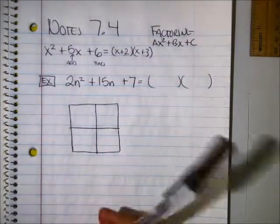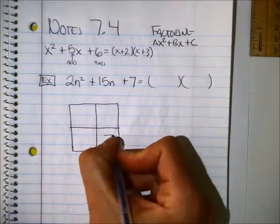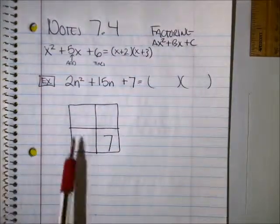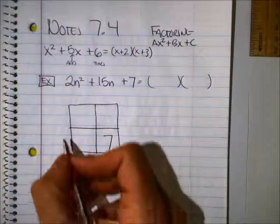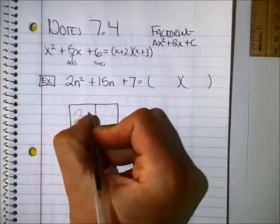That's 7. The 7? That goes in the lower right box. The 2n to the second power will go in the first box.